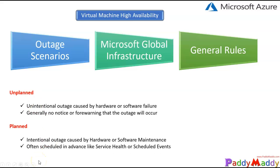When it is a planned outage, you get a notification and you can check the service health within the Microsoft Azure portal. You can check the scheduled events, or you yourself know when you are upgrading your virtual machine series or doing a software update. These are the outages we need to think about when we talk about high availability.